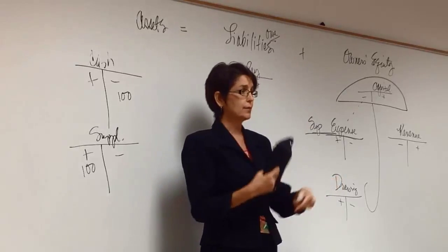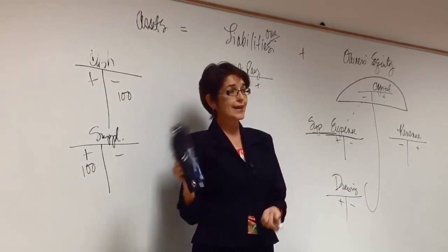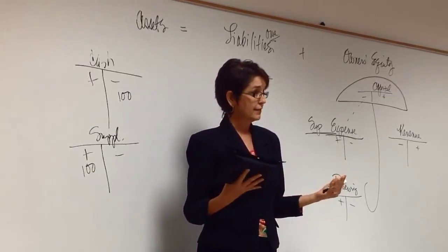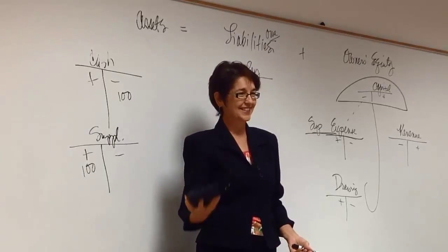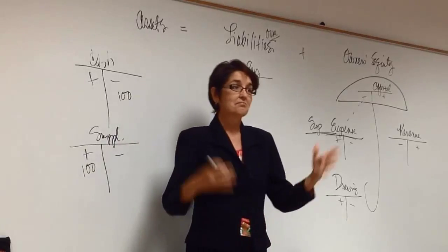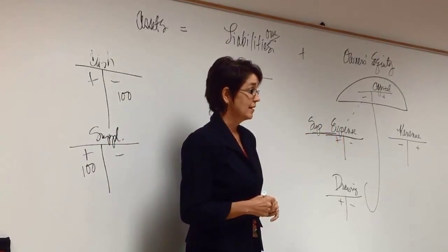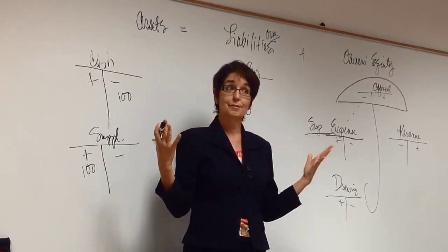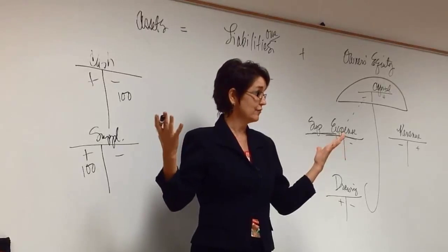So instead of doing it this way, which is obviously certainly not an efficient method of keeping up with this. Instead, what we do is what probably lots of you have done in different businesses that you had. We counted, called inventory. Now we say, at the beginning of the month, I had $100. And at the end of the month, when I counted, I only had $60. Which means, what happened during the month? I used up how many? I used up 40.